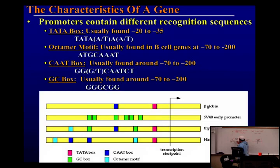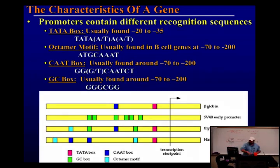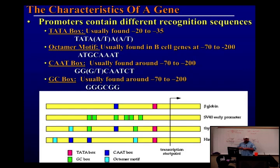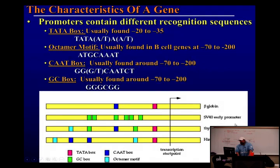The TATA box recruits a transcription factor, and it's the transcription factor that tells the RNA polymerase it needs to come and bind to that specific region. The promoter has different elements — GC boxes shown in green here. If you're a virus, you'd want your genes turned on all the time, because the goal of the virus is to get in, infect the host, make as many viruses as you can, and get out before being detected by the immune system. So this promoter is on all the time.